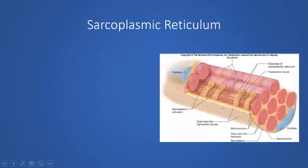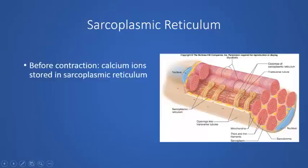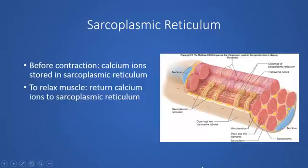In a relaxed muscle, calcium ions are stored inside the sarcoplasmic reticulum. Part of the process of contracting the muscle is allowing those calcium ions to flow out of the sarcoplasmic reticulum, where they get in among the protein filaments, bind to the troponin, and allow the cross-bridge cycle to proceed. Logically, the counteraction is to remove those calcium ions and place them back in the sarcoplasmic reticulum — that naturally results in muscle relaxation.